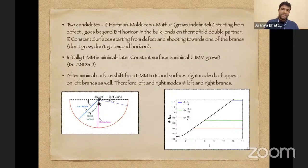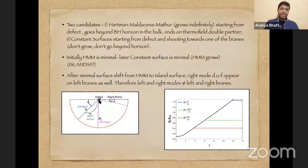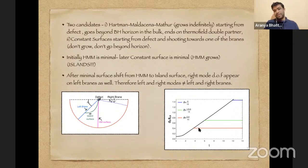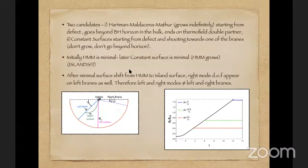There are two kinds of RT surfaces: one going from one defect to its partner — the Hartman–Maldacena–Mathur surface, which grows indefinitely — and surfaces that end on the left or right brane. One finds a surface ending on the left brane which, after some time, becomes the minimal surface. Initially the Hartman–Maldacena–Mathur surface is minimal, but at a later time this island surface becomes minimal, producing a transition that reproduces the eternal black hole page curve.